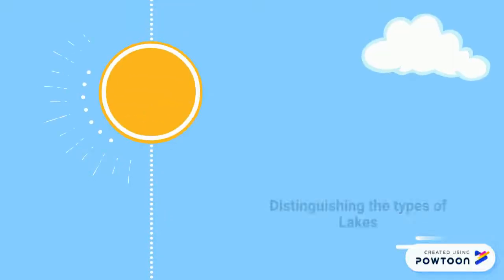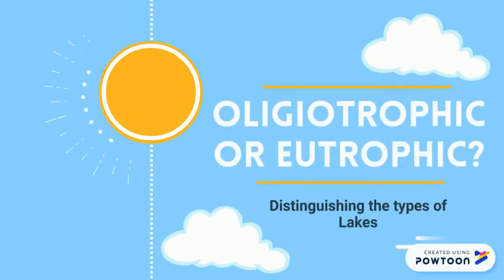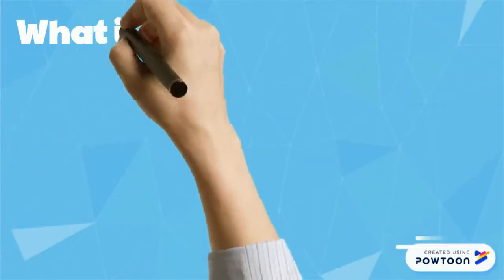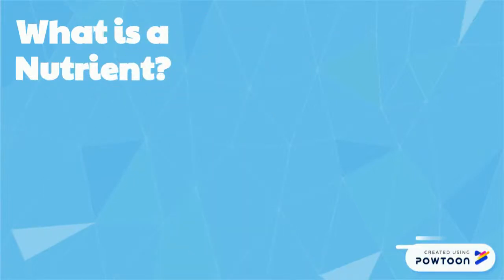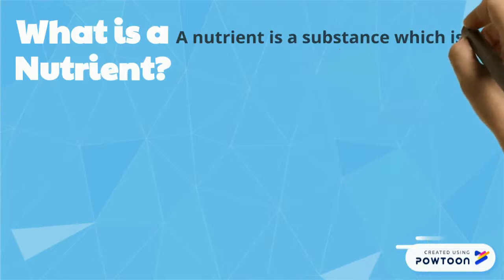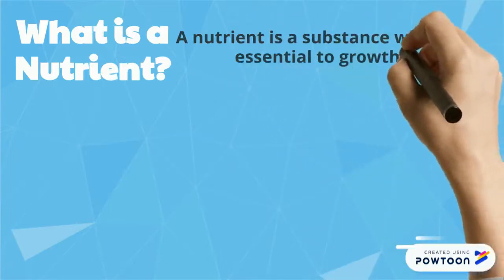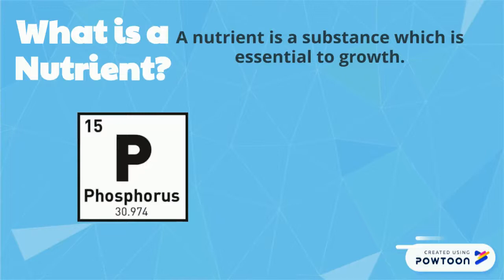In this video, I'm going to talk about the difference between eutrophic and oligotrophic lakes. To start off with, I'm going to simply define what a nutrient is because it is present in lakes. A nutrient is a substance which is essential for growth. Some common nutrients are phosphorus, which is considered limiting, and nitrogen.